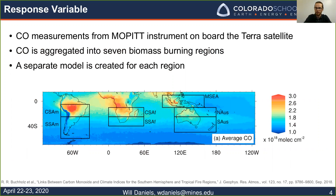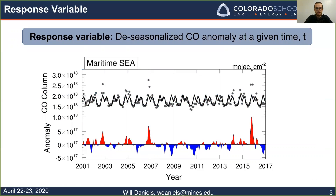We're doing a regression model, so we have predictive variables and response variables, and there are data sets for each. Starting with our response variable, which is carbon monoxide: we get the carbon monoxide data from the MOPITT instrument, which is on a NASA satellite. We aggregate that data into seven different biomass burning regions, and in each of those regions we create a separate model. That plot here is showing those seven regions — all in the southern hemisphere, centered on big burn areas.